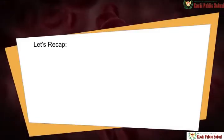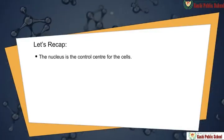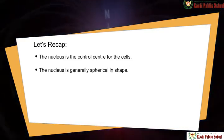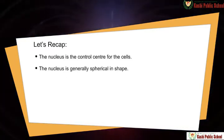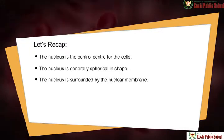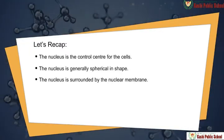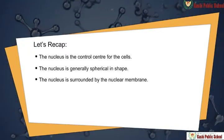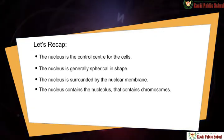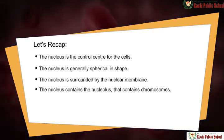Let us recap. The nucleus is the control center for the cells. The nucleus is generally spherical in shape. The nucleus is surrounded by the nuclear membrane. The nucleus contains the nucleolus that contains chromosomes.